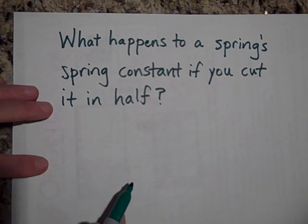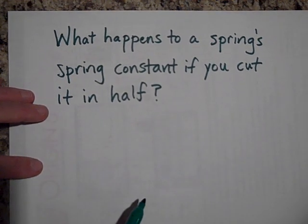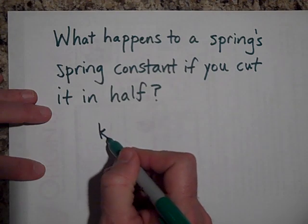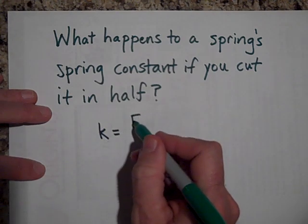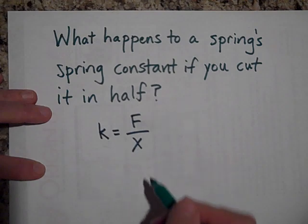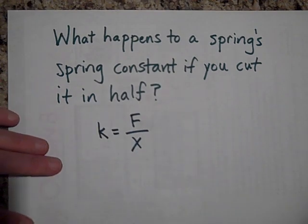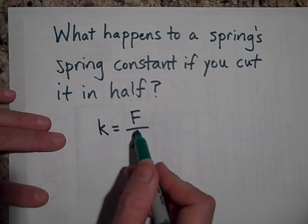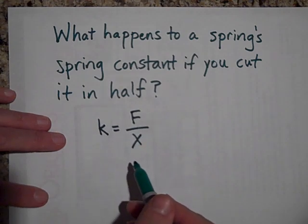Okay. Well, if you cut it in half, then when you put the same force on it, let's look at spring constant is equal to F over X. So if you cut a spring in half, you take one of the halves, you put the same force on it.